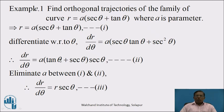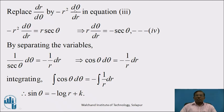Now we have to eliminate parameter a between equation 1 and 2. From equation 1, we know that a(sec θ + tan θ) = r. Substituting into the right-hand side of equation 2, we get dr/dθ = r · sec θ. Denote this equation by 3. This is the differential equation of the given polar curve. Now, to find the orthogonal trajectory, we replace dr/dθ by -r² dθ/dr in equation 3. We get -r² dθ/dr = r · sec θ. When r is cancelled from both sides, we get r · dθ/dr = -sec θ. Denote this equation by 4.